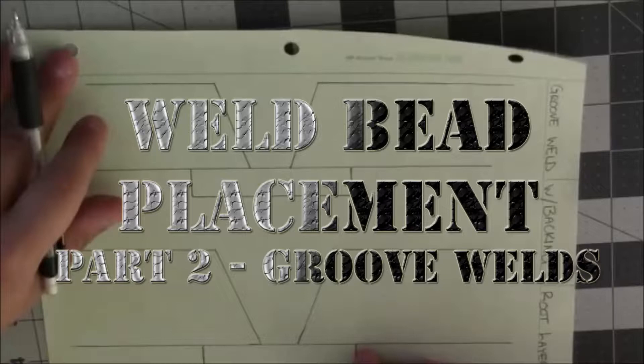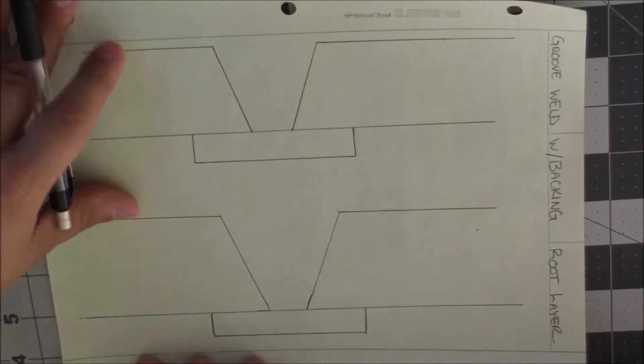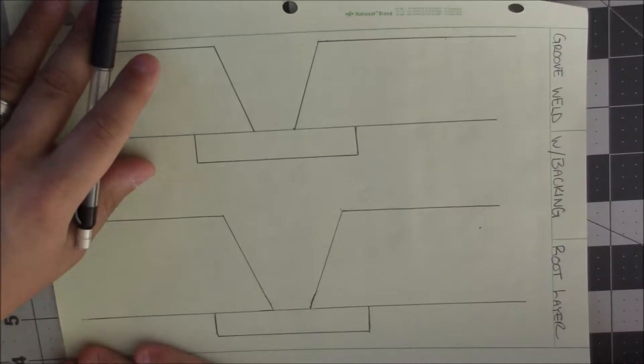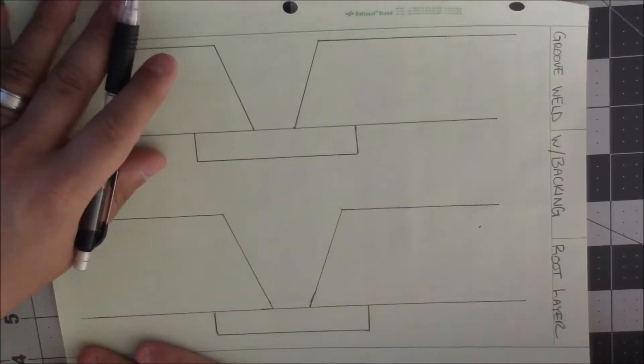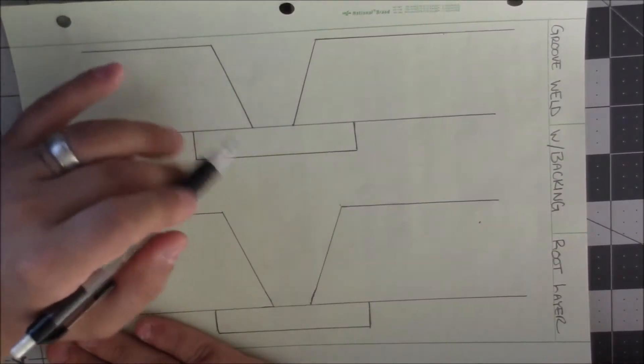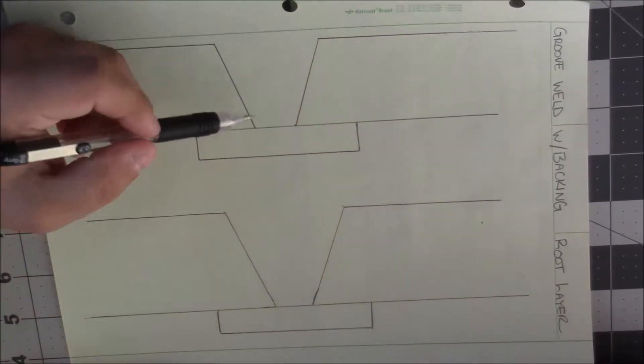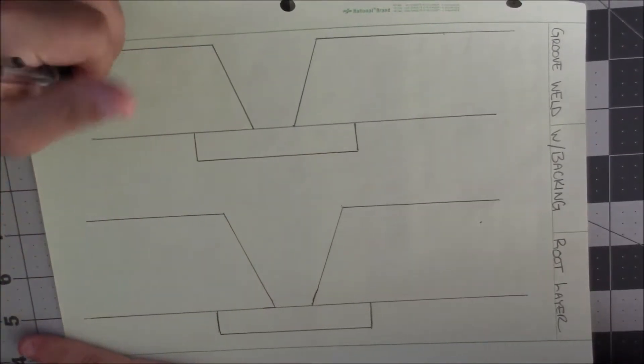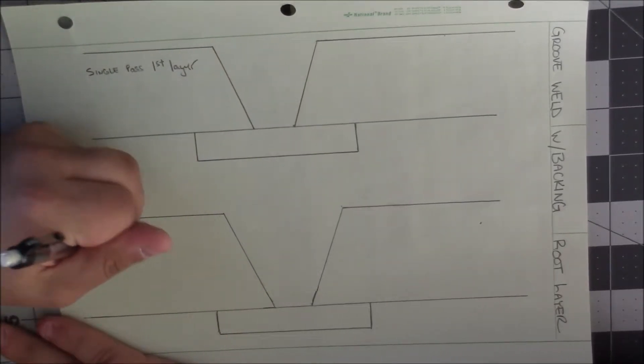So let's move on to groove welding with backing, and this one is particularly the root layer. This is actually what sparked the question off of the other videos. On top here I'm going to say that this is a single pass first layer, and on bottom I'm going to do a multi-pass first layer.